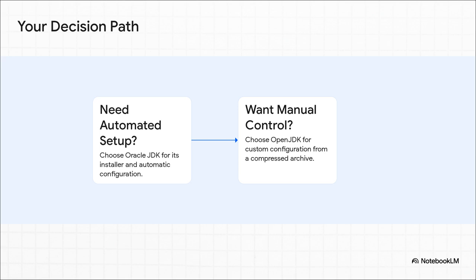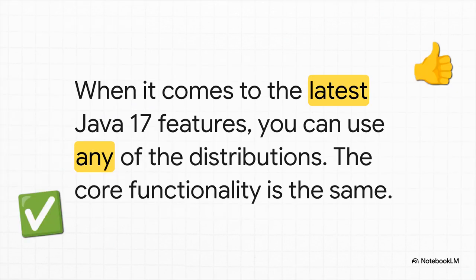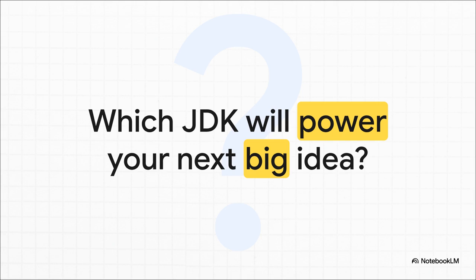Let's be absolutely clear about one thing, because this is really important. When it comes to actually writing code and using all the latest Java features, both of these will get you to the exact same finish line. The core functionality is identical. Your choice isn't about what you can build — it's all about how you prefer to set up your workshop. The automated convenience of an installer on one hand, and the complete control of a manual toolkit on the other. The path you pick really just depends on your personal workflow. So the only question left is: which JDK is going to power your next big idea?